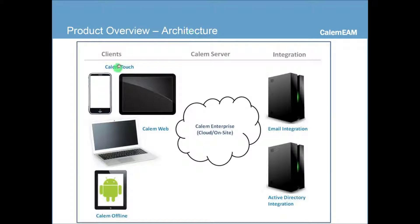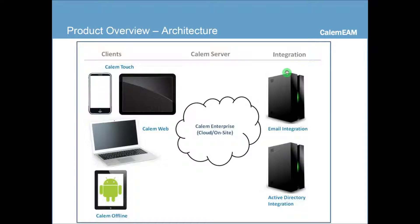From an architecture perspective, we support the mobile clients — Calum Touch — the web client, Calum Web, as well as the offline client, Calum Offline. In the middle area is the Calum Server, and on the right-hand side are the integrations. Calum Enterprise provides both email and active directory integration out of the box.